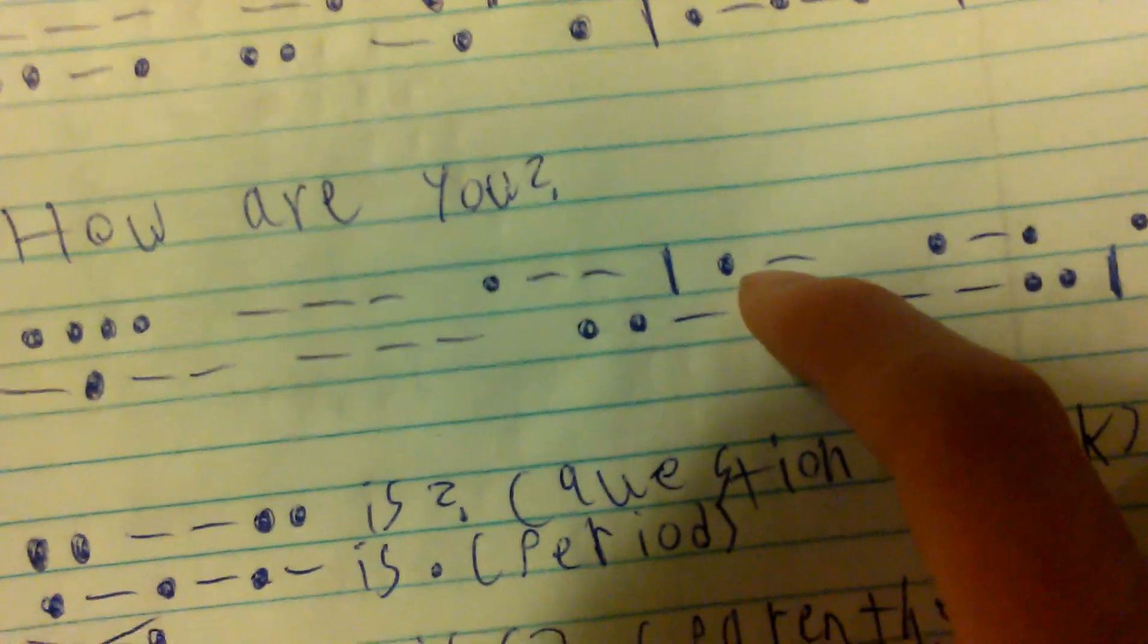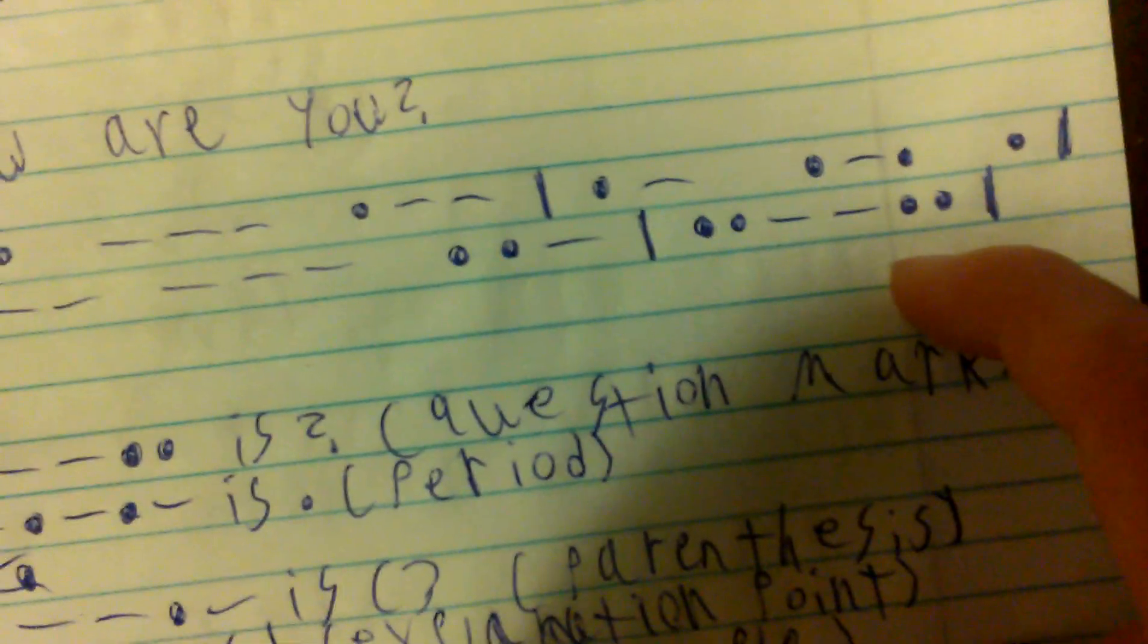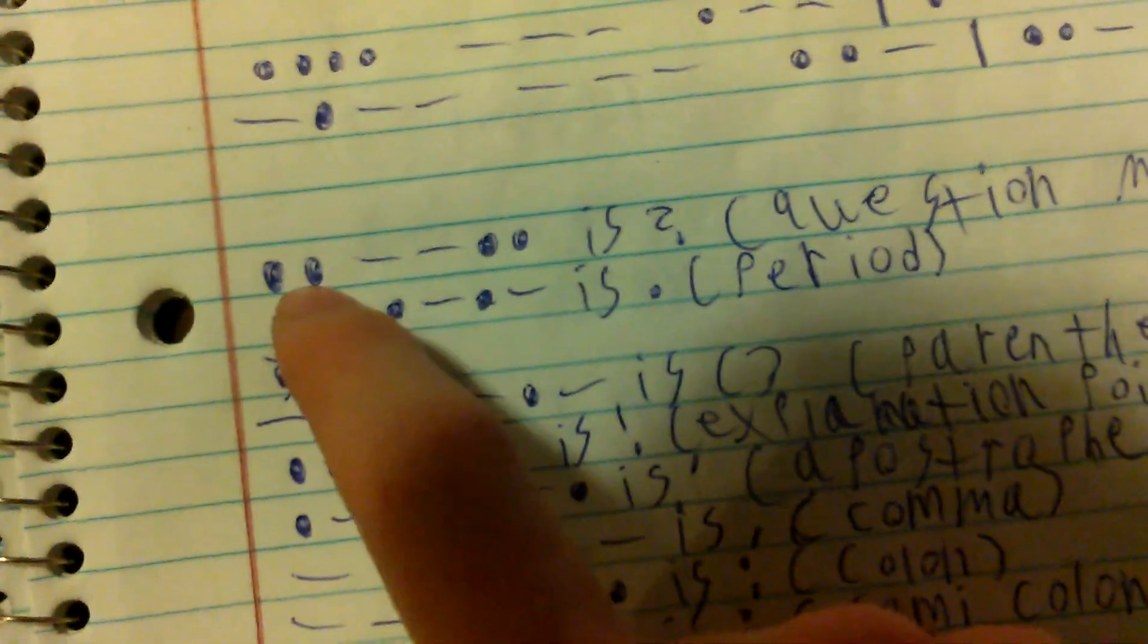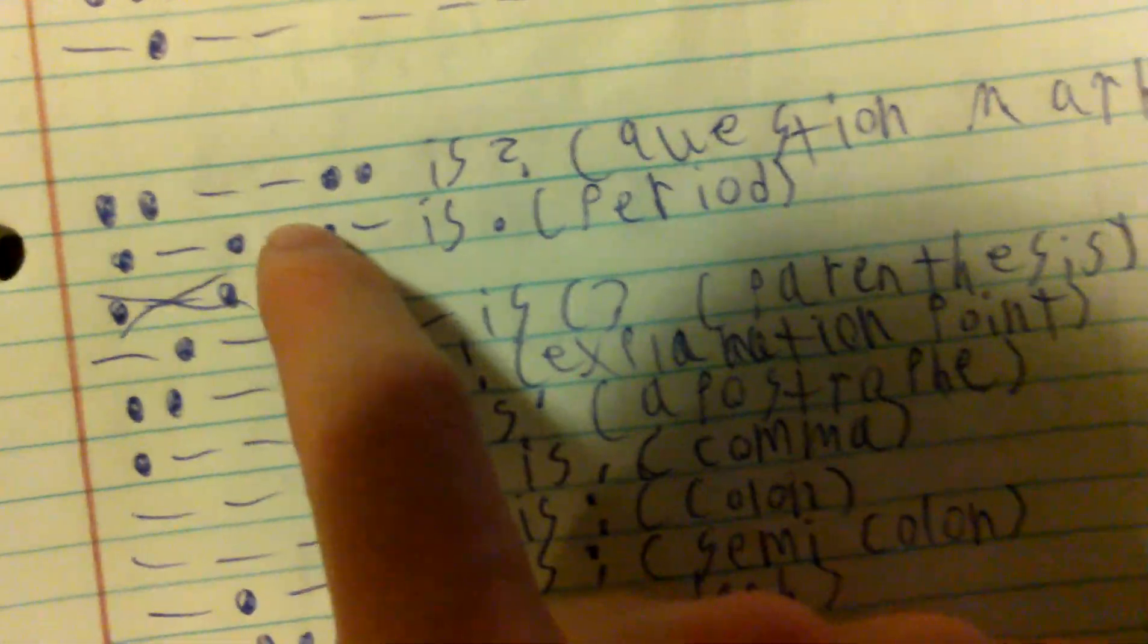Then I put 'how are you' with a question mark: H, O, W, space, A, R, E, space, Y, O, U, space, and then question mark. Dot dot dash dash dot dot is a question mark.